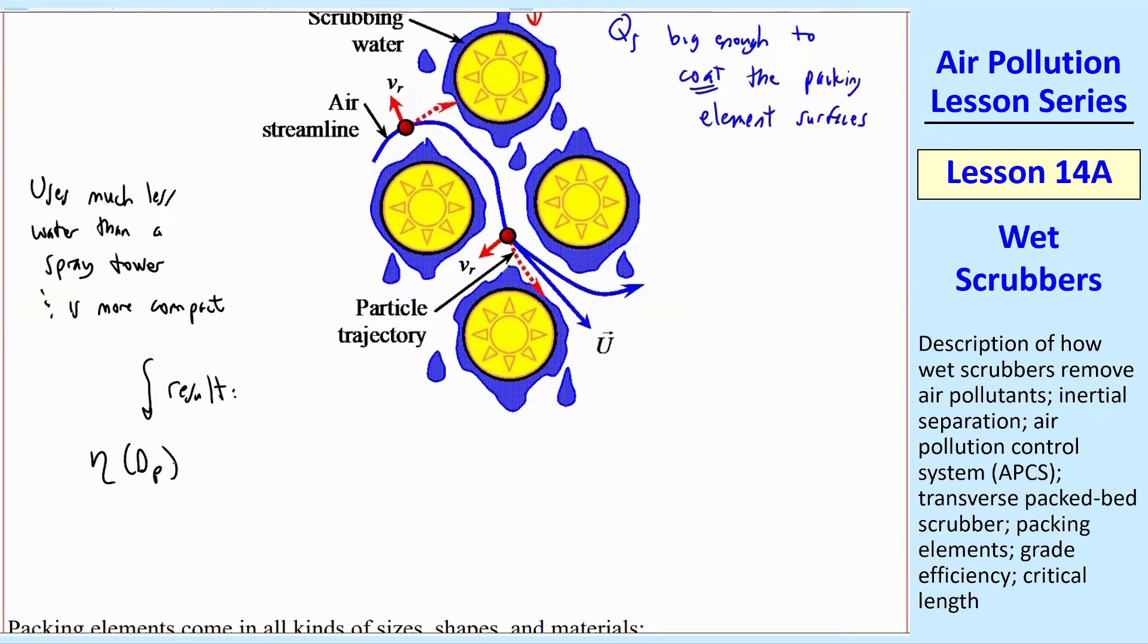I'll just give you the result. The grade efficiency for some particle diameter of the air pollutant particles ends up being 1 minus EXP negative L over LC. That should look familiar. It's the same equation we had for the spray tower and for a number of other examples.